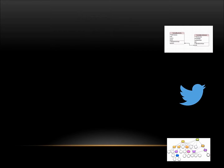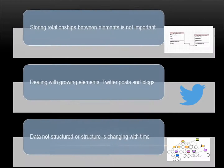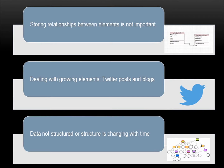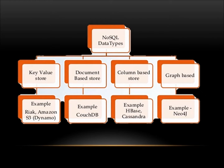NoSQL will be used when great quantities of data throughput are important, storing relationships between elements is not important, and when dealing with growing elements such as Twitter posts and blogs. It is also suited when data is not structured or the structure is changing with time. NoSQL has many different data types, such as key-value storage, document-based storage, column-based storage, and graph-based storage.